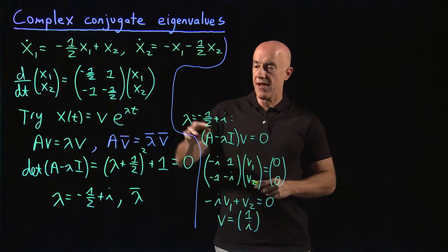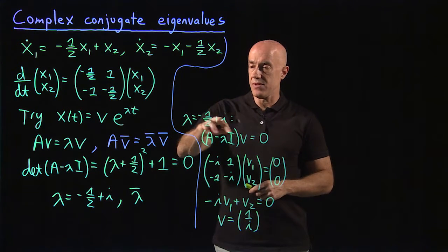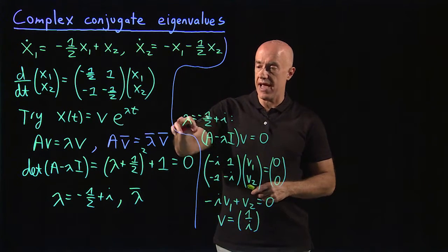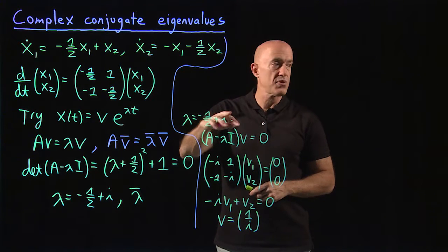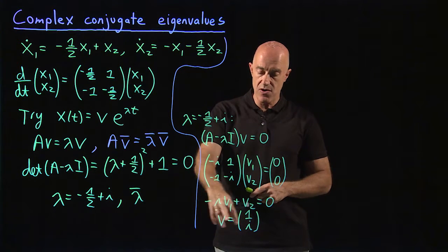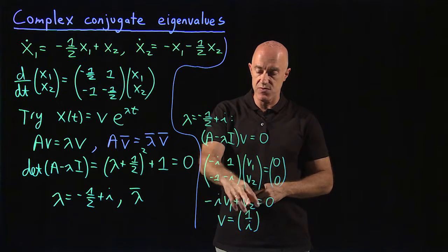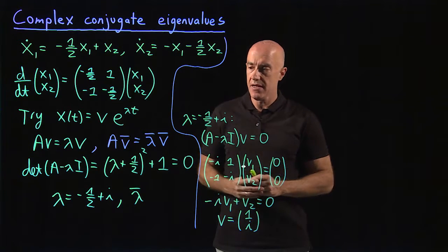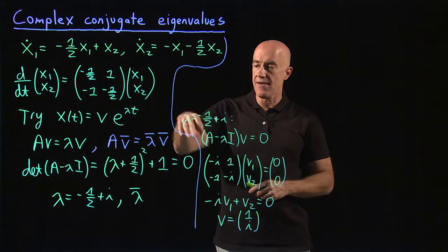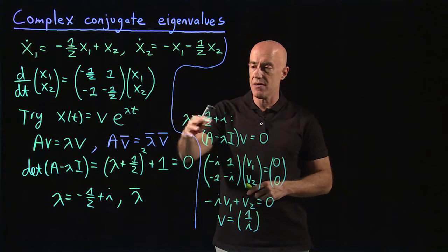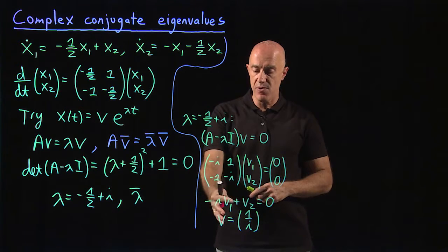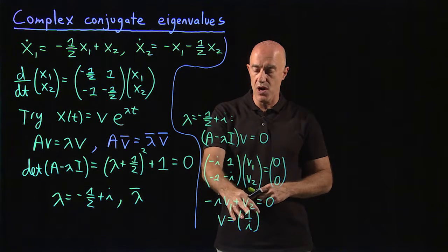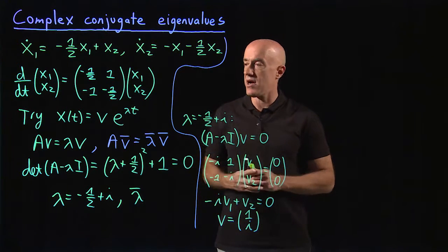So we have eigenvalue λ = −1/2 + i with associated eigenvector v = [1, i]. We also have λ̄ = −1/2 − i with eigenvector v̄ = [1, −i].